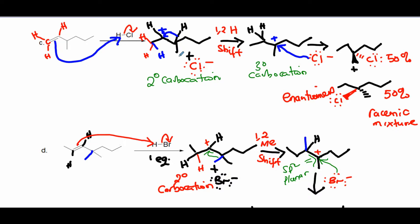Decide which group moves: the methyl, the hydrogen, or the propyl. A molecule reasons to move the lighter one — the hydrogen — because it uses less energy than moving a methyl or propyl group. You shift it with the bond; it's a 1,2-hydride shift — from one carbon to the other — because you're moving the hydrogen and exchanging positions between the hydrogen and the plus sign.